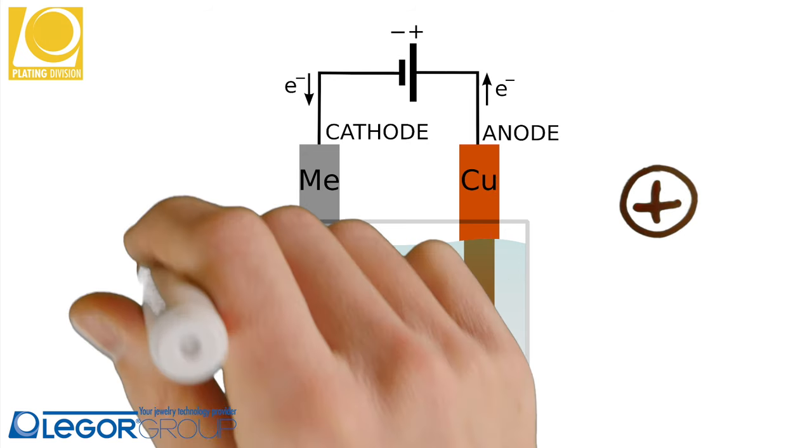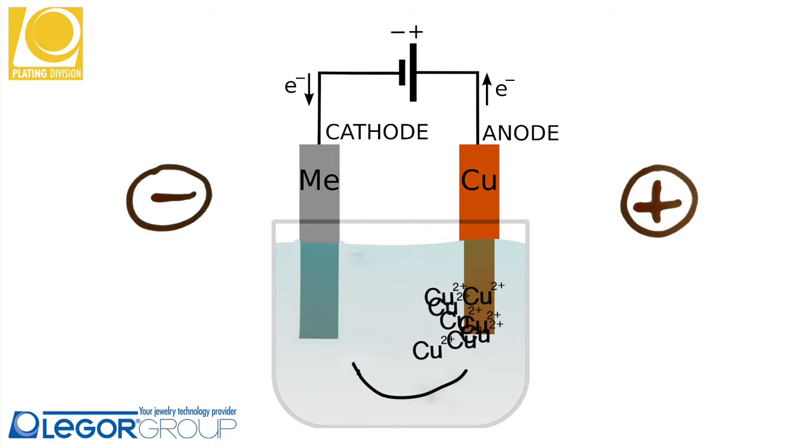On the cathode, on the other hand, there's a concentration of electrons and so a negative charge.